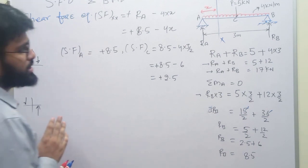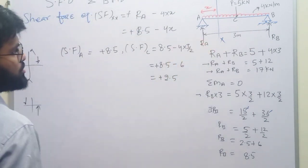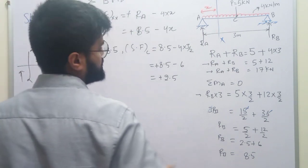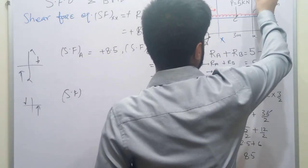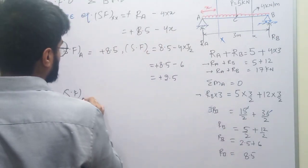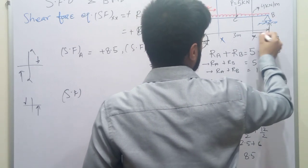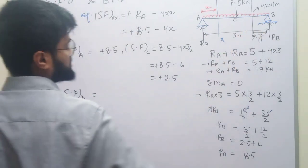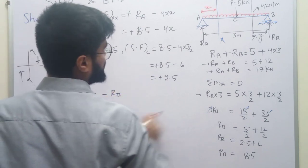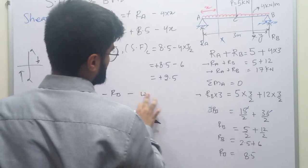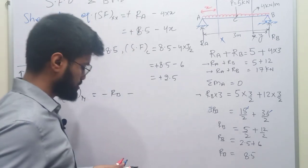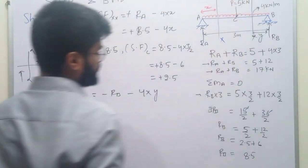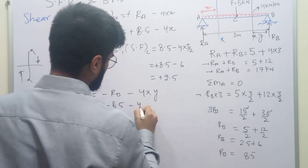अब section के उस तरफ से देखते हैं। Section YY लेते हैं, B से distance y। Convention के according RB downward नहीं, RB की तरफ से negative होगा, minus RB। और UDL के लिए plus में होगा। तो SF at YY = -RB + 4y = -8.5 + 4y।